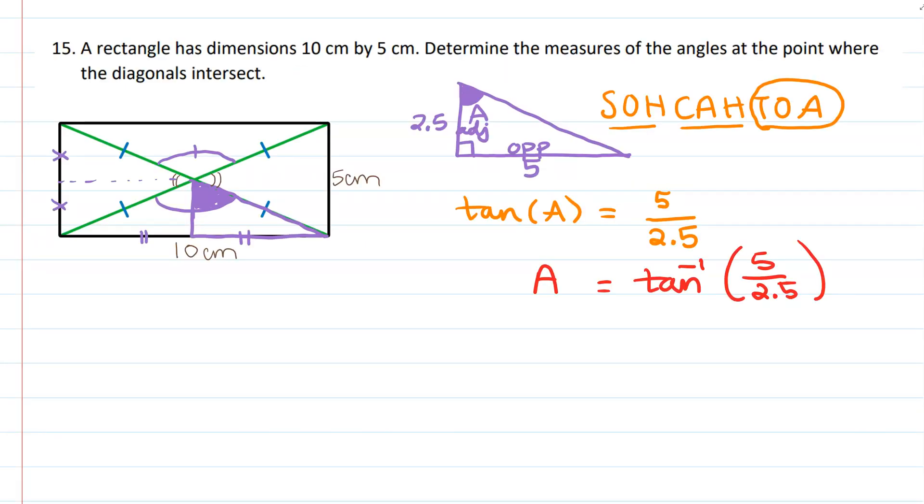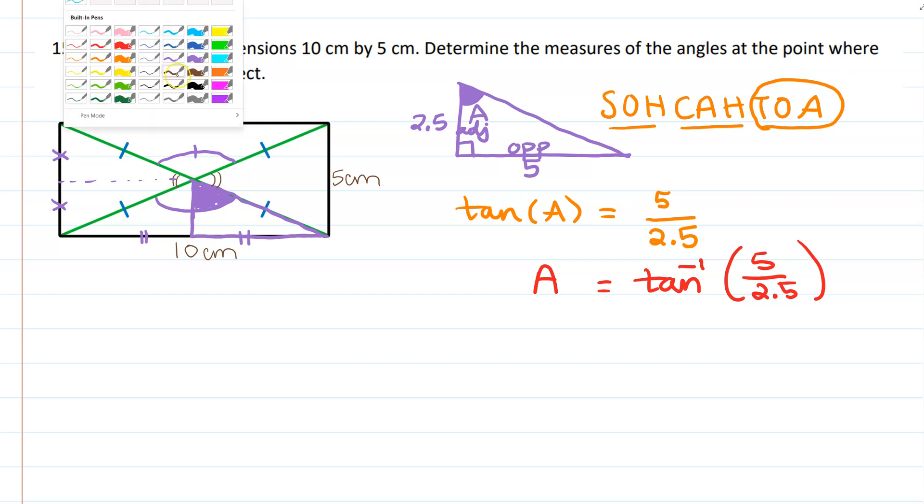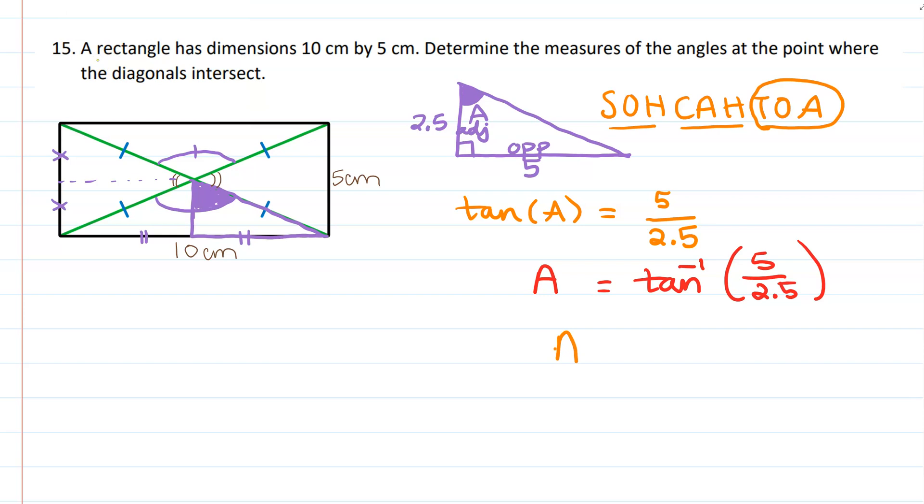Our angle A is approximately 63.4. That's what the calculator said. If angle A is 63.4, which is this guy right here, 63.4, okay, so then twice of it would be 2 times 63.4, would be 126.8, which is that angle right here, 126.8.